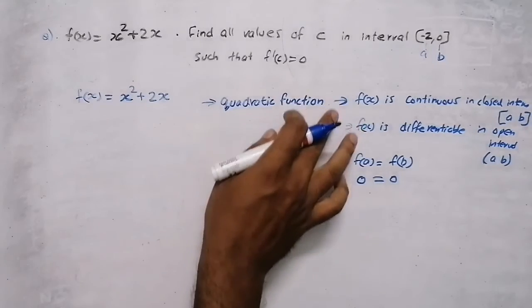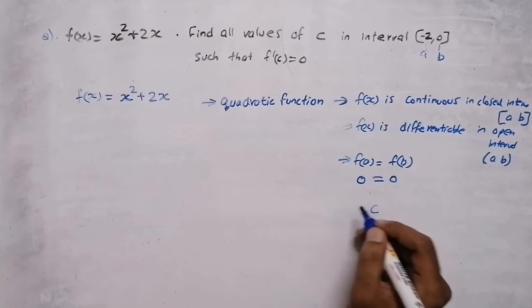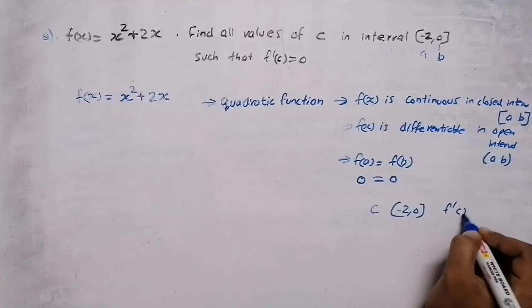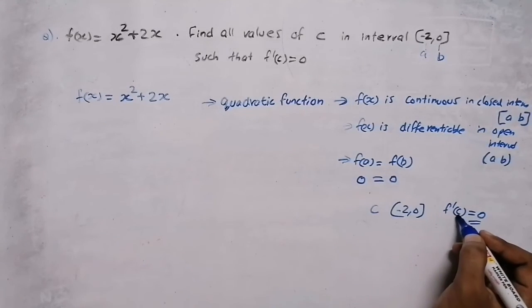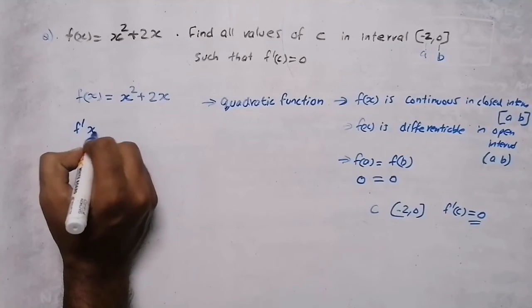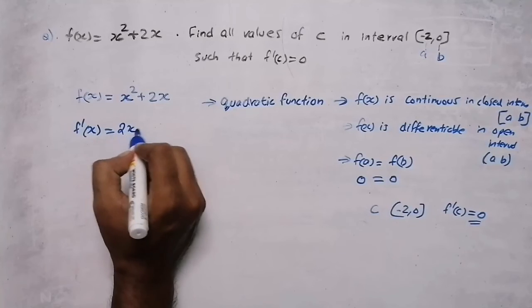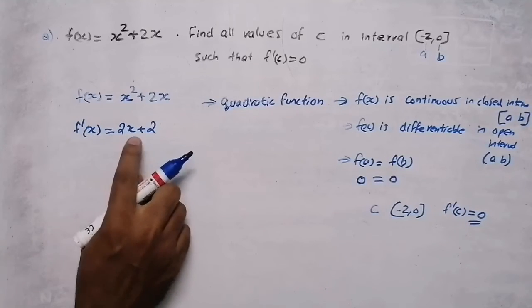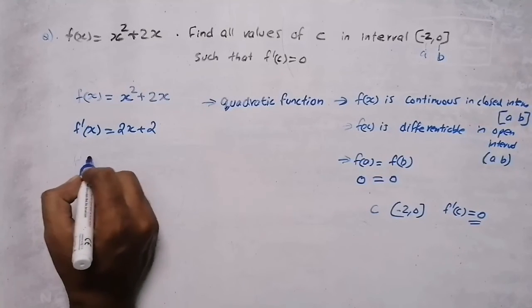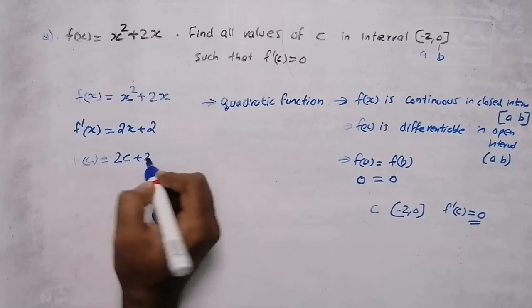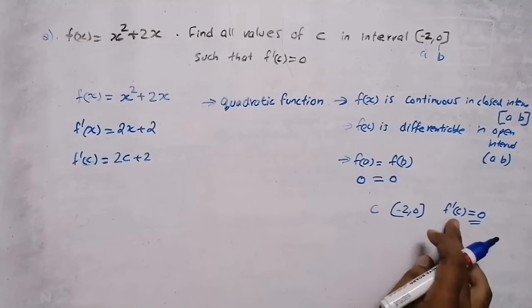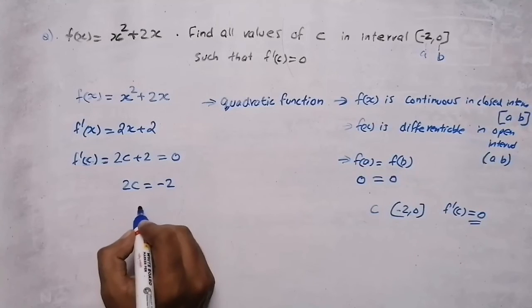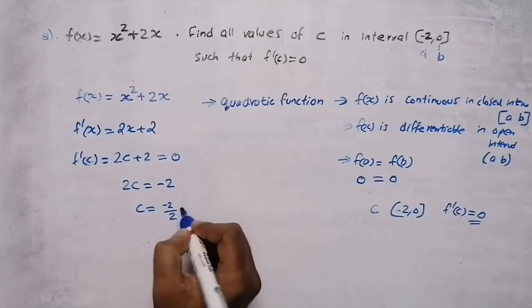All three conditions of Rolle's theorem are satisfied. Then there will be a point c in the interval (−2, 0) such that f'(c) = 0. So we need to find f'(x). f'(x) = d/dx of x² + d/dx of 2x = 2x + 2. Now f'(c): replacing x with c gives f'(c) = 2c + 2. According to Rolle's theorem, f'(c) = 0, so 2c + 2 = 0, giving 2c = −2, therefore c = −1.